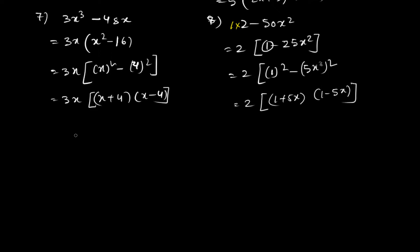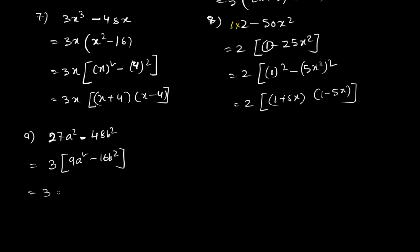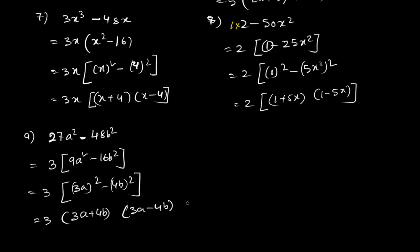Question 9 is 27a² - 48b². We take 3 common, leaving 9a² - 16b², which converts to (3a)² - (4b)². Applying the formula gives 3(3a + 4b)(3a - 4b).